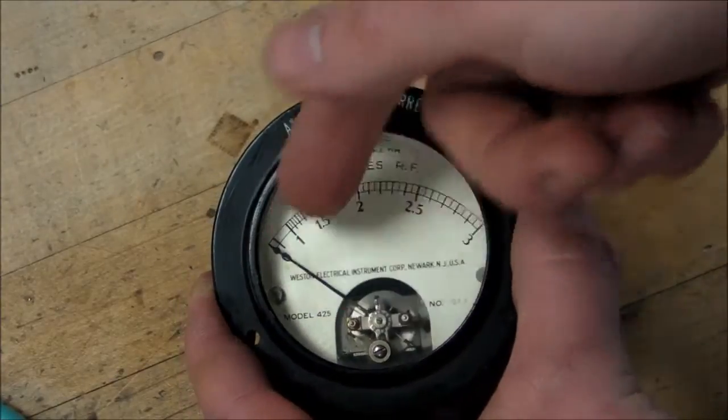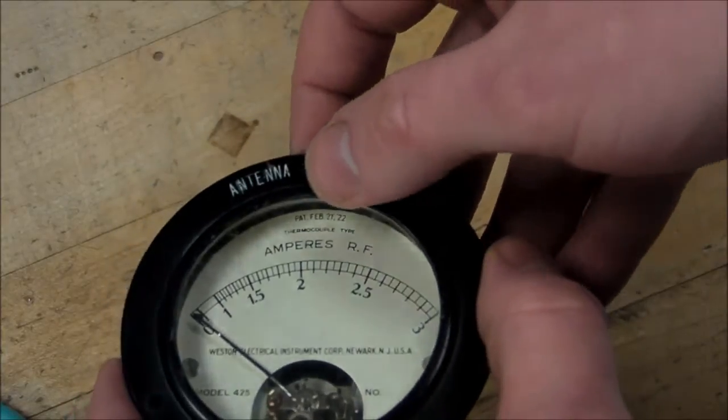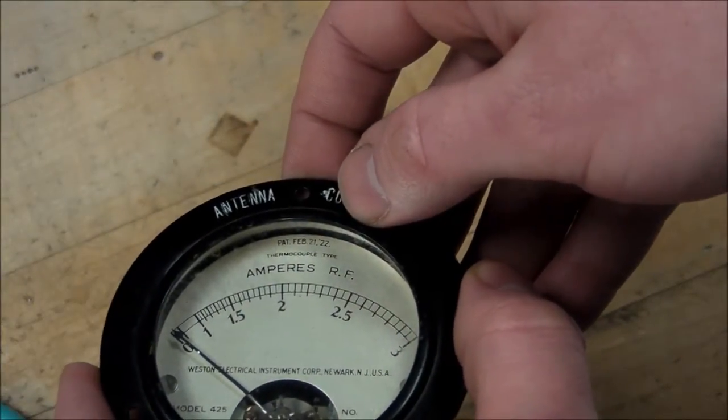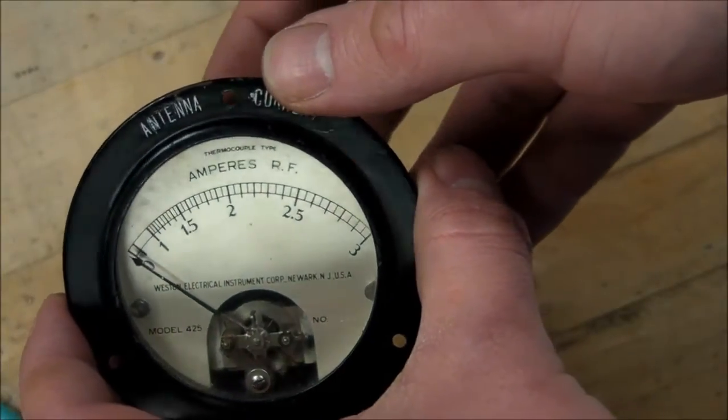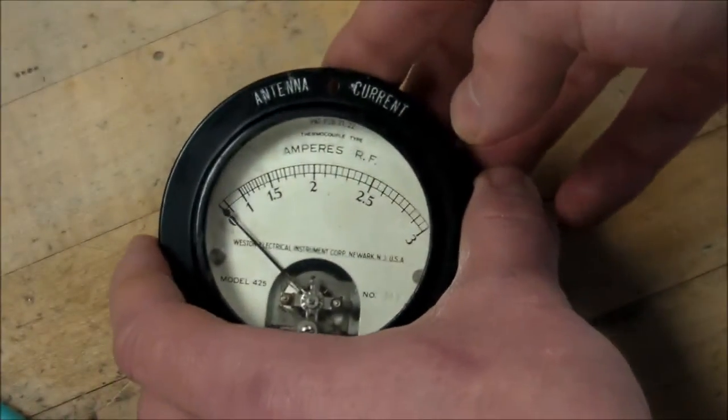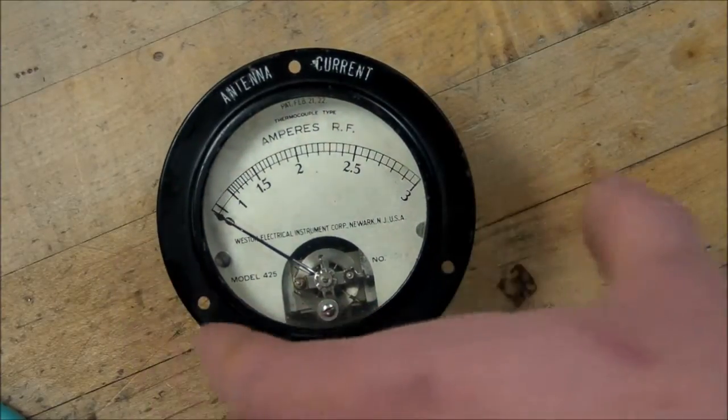You can see just from its construction, it looks like an ordinary ammeter. It's got the moving coil in there with a permanent magnet, but you can also see right here on the top, thermocouple type. So there's a thermocouple in there that converts the RF current into a DC current. Let me show you how it works first, and then I'll take it apart and show you the inside.